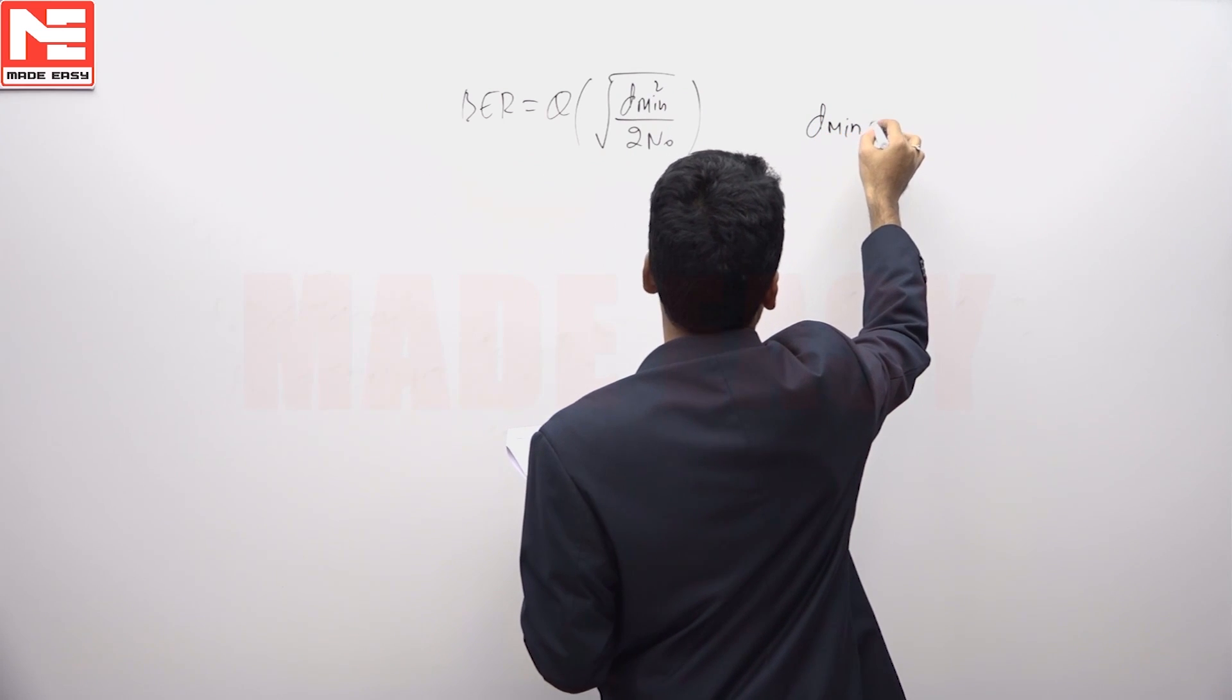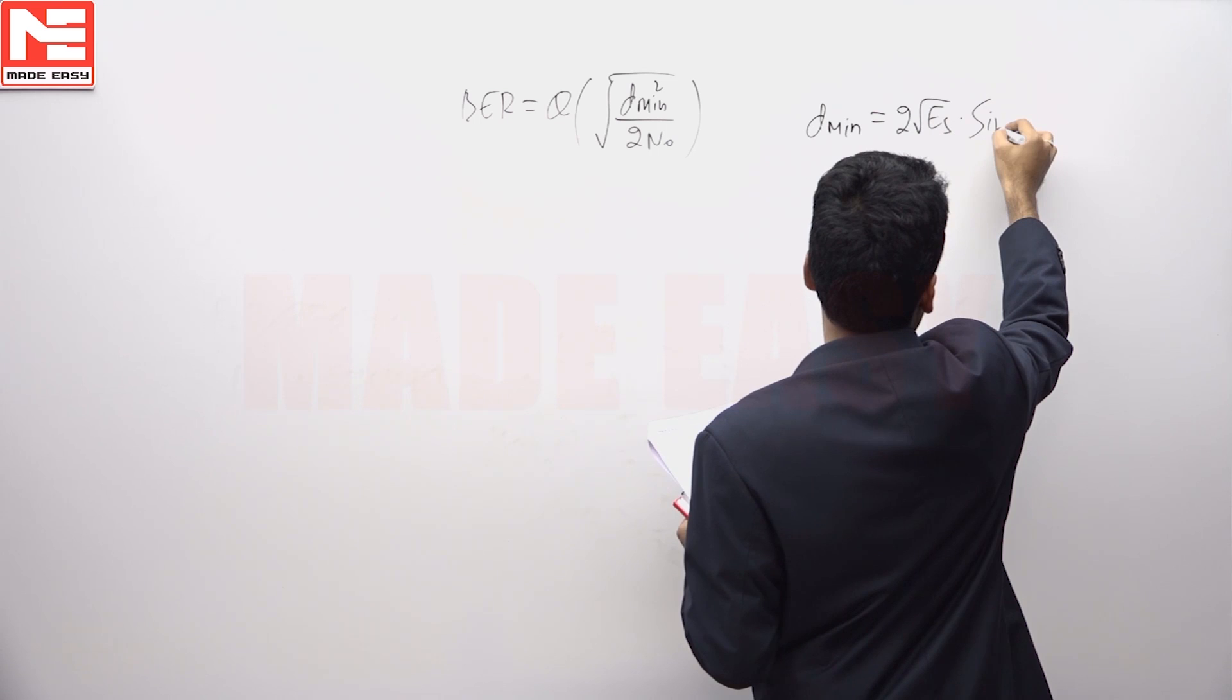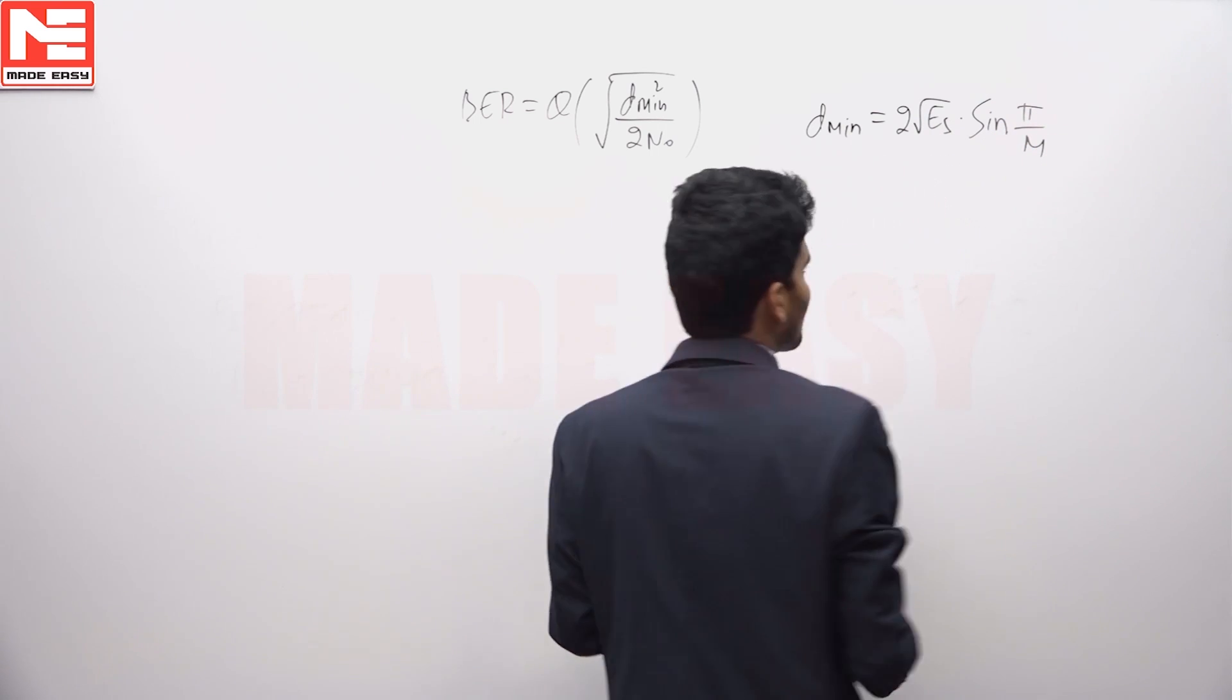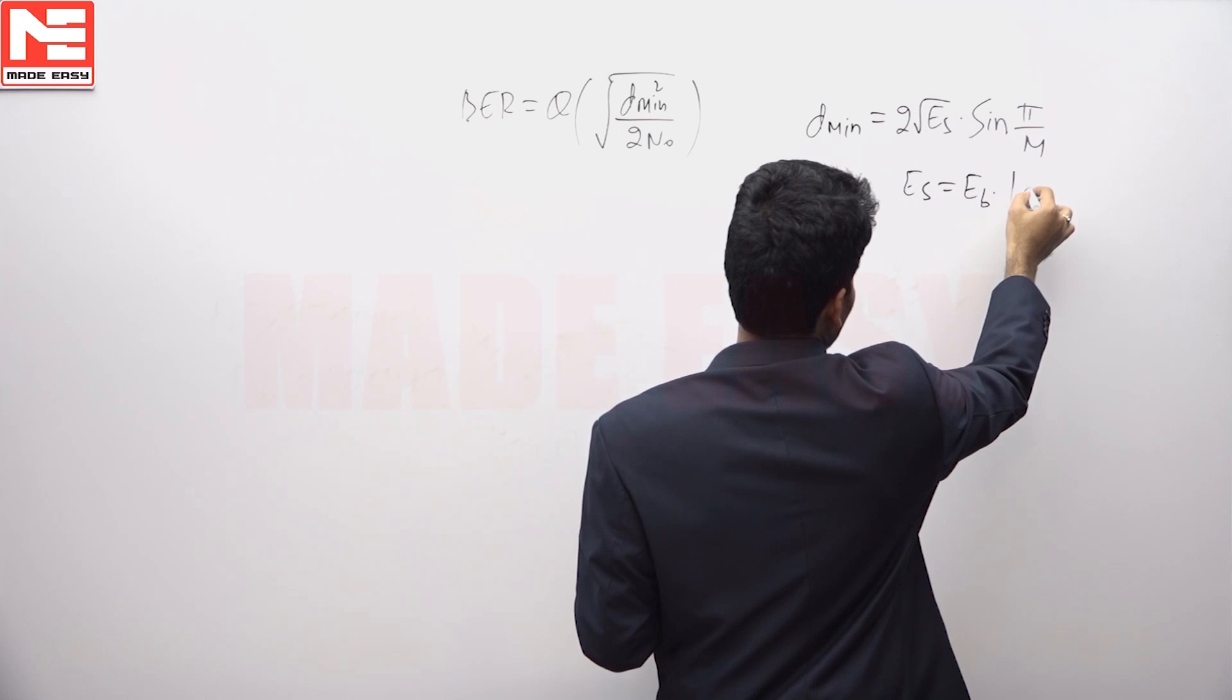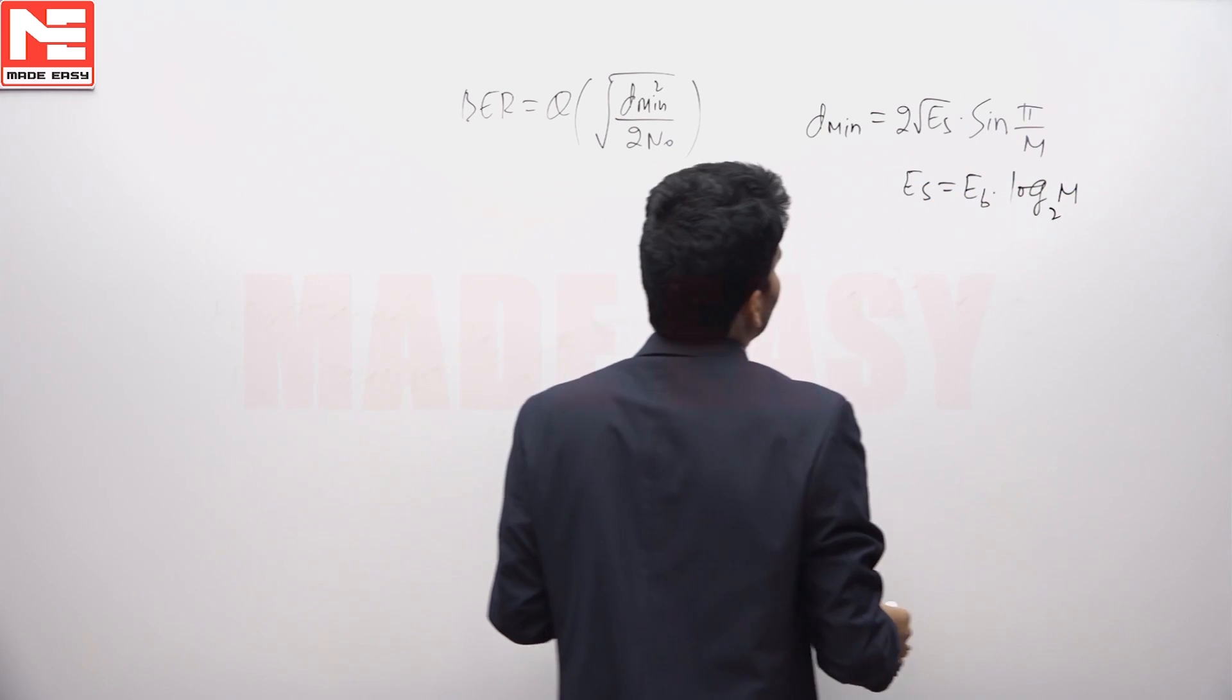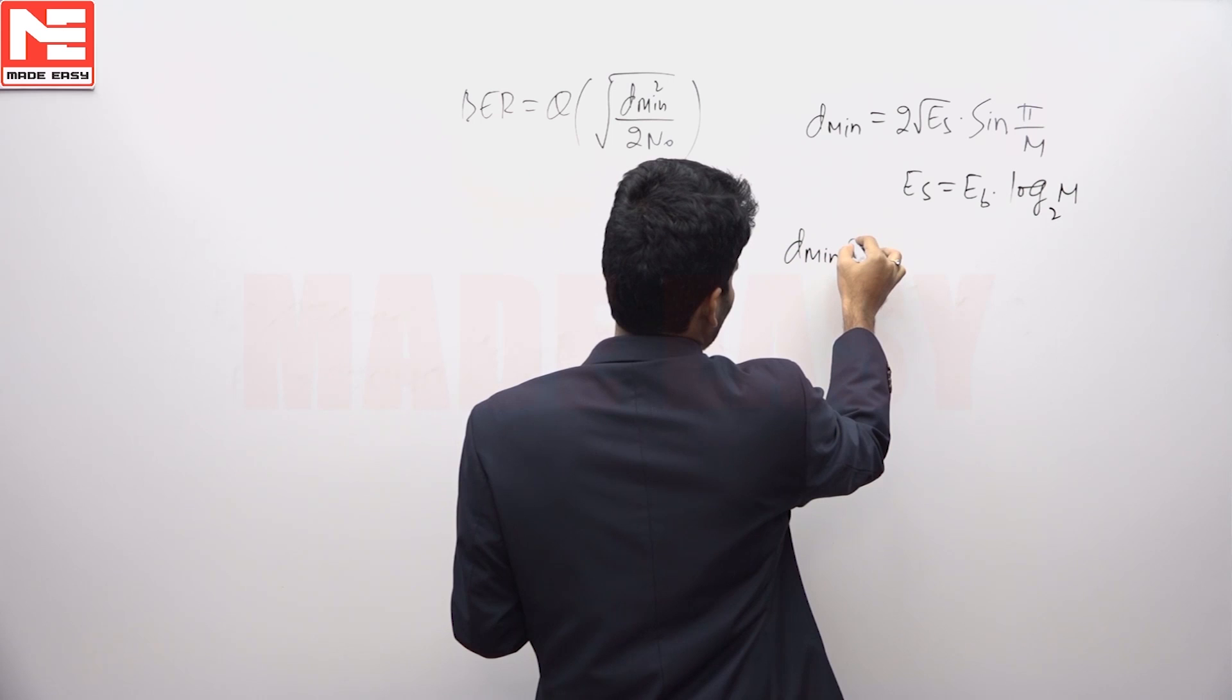This is sin pi by M, and ES equals EB log M base 2. By substituting the respective values here, D min for BPSK and QPSK can be found.